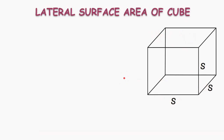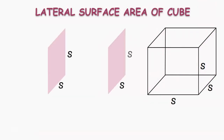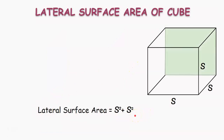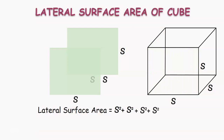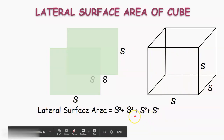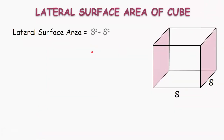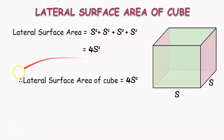Let us consider the side faces, whose dimensions are S each. We get the area of side faces as S square plus S square. And the area of back and front faces are also S square plus S square. Adding these areas together, we get the lateral surface area of the cube as S square plus S square plus S square plus S square, which is 4S square. Therefore, lateral surface area of the cube is 4S square.